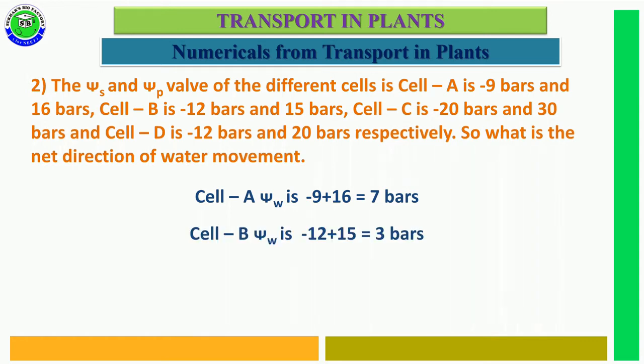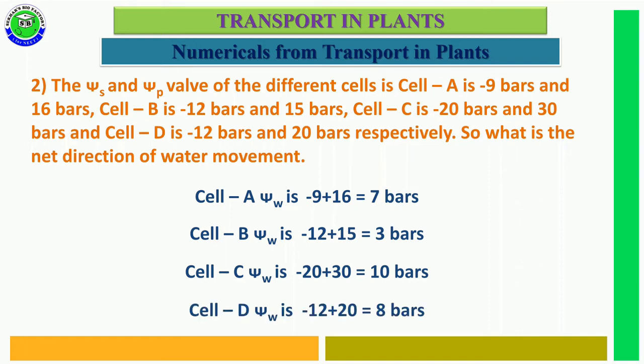Cell B water potential = minus 12 + 15 = 3 bars. Cell C water potential = minus 20 + 30 = 10 bars. Cell D water potential = minus 12 + 20 = 8 bars.